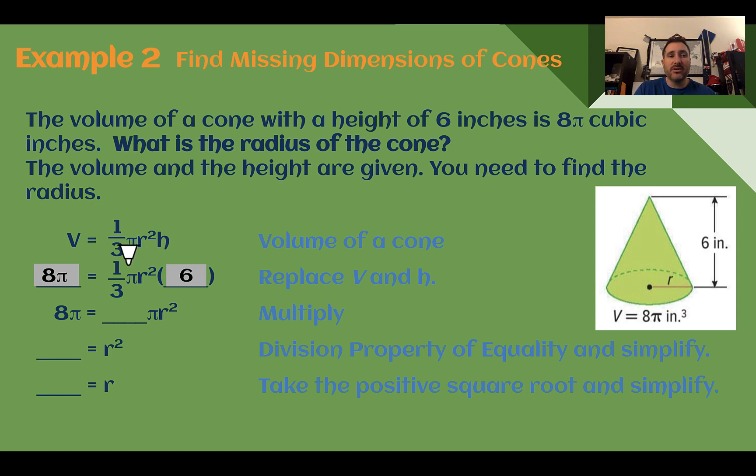So plugging in volume, 8π, and our height of 6. I'm going to simplify this out. So 1 third is going to multiply with 6, or just do 6 divided by 3, and that's 2.